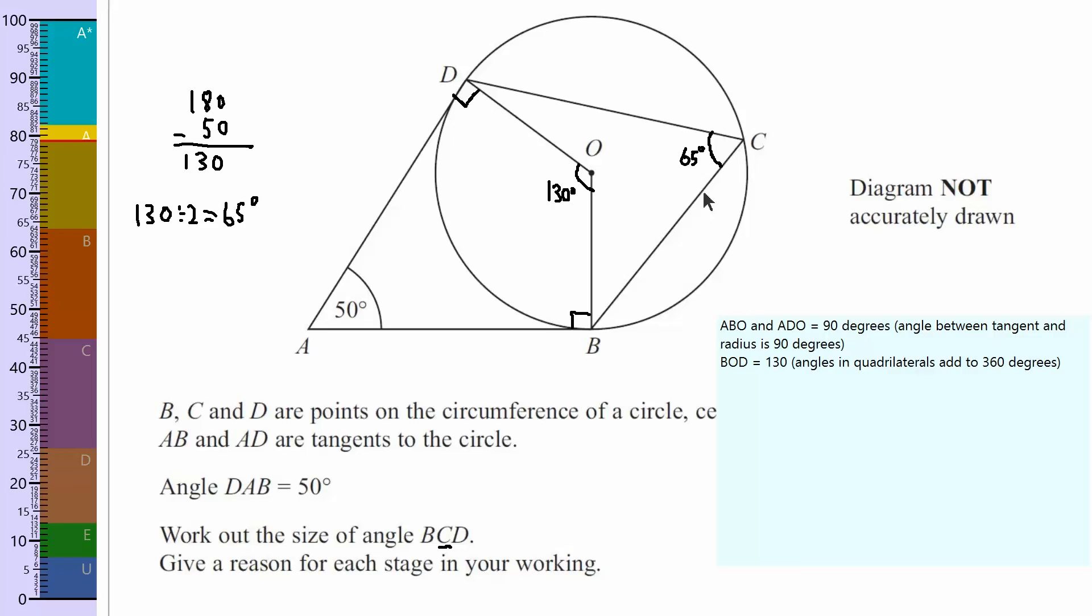And we'll write down the proof, or the reasons. So BCD equals 65 degrees. Angle at the centre, or angle at the circumference, is half angle at the centre. So either write down angle at the centre is twice the angle at the circumference, or angle at the circumference is half angle at the centre. It's the same thing.